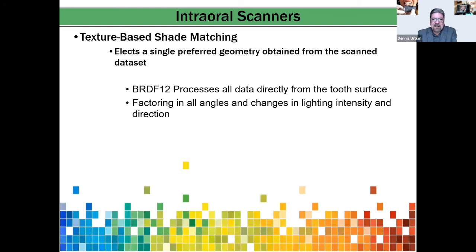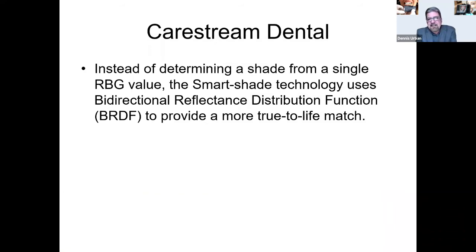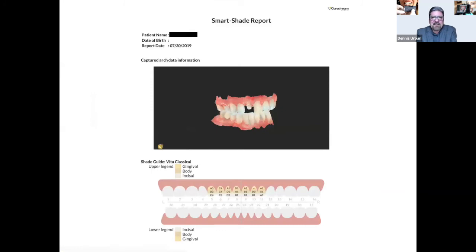One of the most relevant intraoral scanners for shade is the Carestream system. Instead of determining shade from a single RGB value, Carestream's Smart Shade technology uses a bidirectional reflectance distribution function (BRDF) to provide a more true-to-life match. The system also captures stump shades effectively, and Carestream recently released a new digital shade taking system that works well. 3Shape TRIOS is another intraoral scanning series that also performs well for shade.